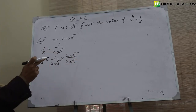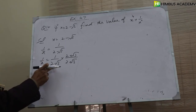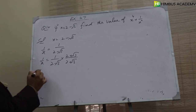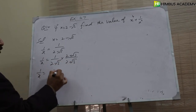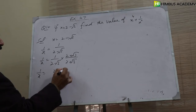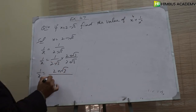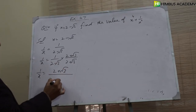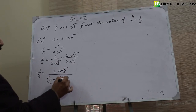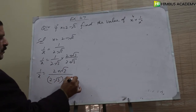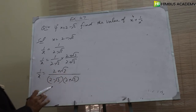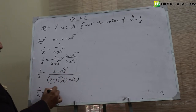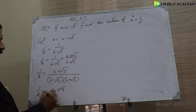Multiply and divide by the conjugate of the denominator۔ 1 over x کے numerator اور denominator دونوں کو 2 plus square root 3 سے multiply کریں گے۔ 2 minus square root 3 اور 2 plus square root 3 کا product آئے گا، تو یہاں پر 1 over x is equal to 2 plus square root 3 ہو گا۔